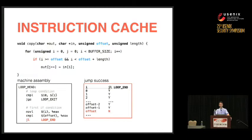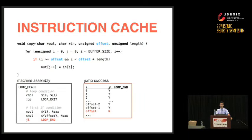Looking at why this code leaks even without returning a value: there's a for loop iterating over buffer indices, with a branch checking if we're in bounds — if i is greater than or equal to offset or less than offset plus length. Compiled to x86, this becomes a comparison and a jump. For i equals zero, one, two, the jump skips the if-branch and goes to the loop end, until i equals offset, at which point the jump goes inside the branch and falls through.